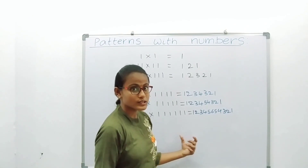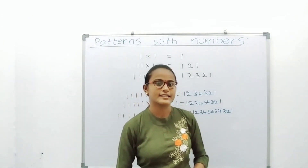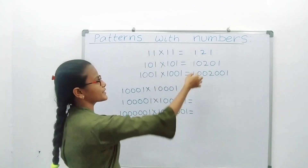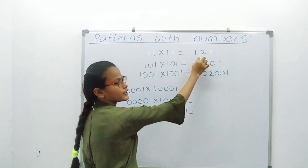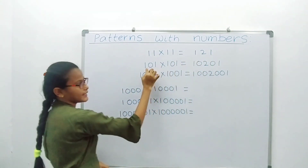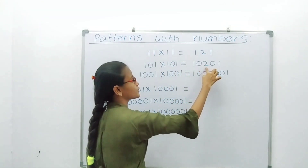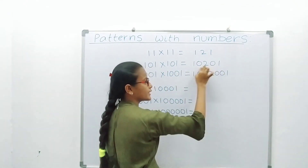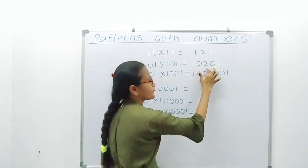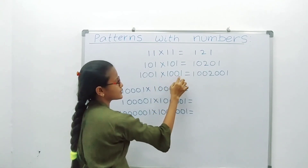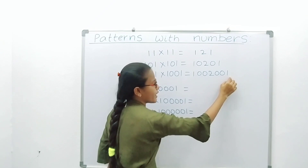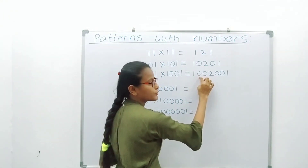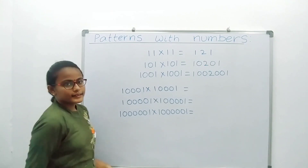Suppose there are 7 ones into 7 ones. The answer is 1234567654321. See how this pattern works: 11 into 11 equals 121. We know that. 101 into 101 equals 10201 — here we are including 0 between the 1s, and also 0s left and right of 2. 1001 into 1001 equals 1002001 — here we are including two 0s, so the answer also has two 0s left and right of 2.